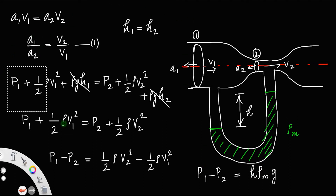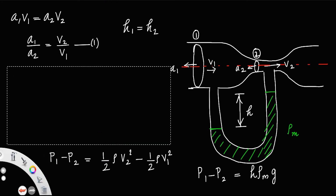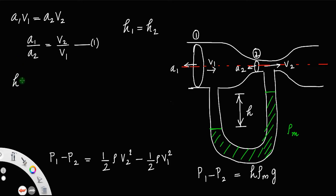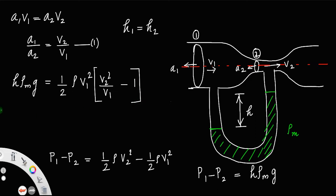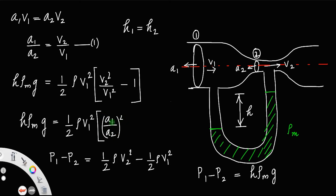Substituting into the equation: h·rho_m·g = half·rho·V1²·(V2²/V1² − 1). Since V2/V1 = A1/A2 from equation 1, we substitute V2²/V1² = A1²/A2², giving h·rho_m·g = half·rho·V1²·(A1²/A2² − 1), which simplifies to half·rho·V1²·(A1² − A2²)/A2².